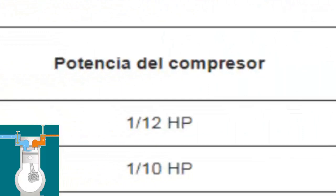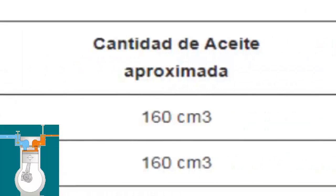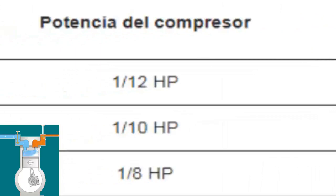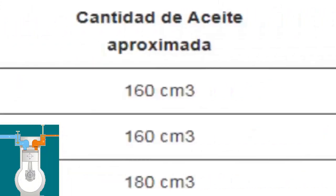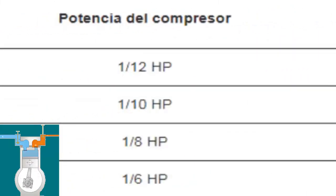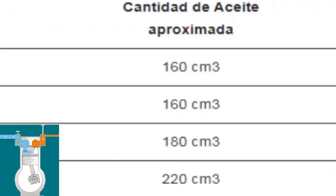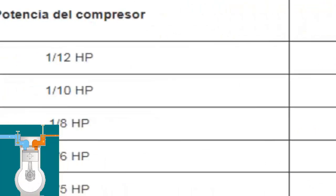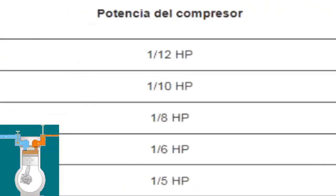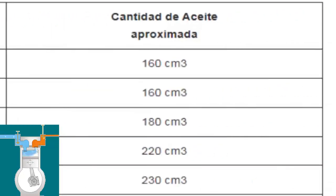12th HP compressor with an approximate oil quantity of 160 cubic centimeters. 12th HP compressor with an approximate oil quantity of 160 cubic centimeters. 12th HP compressor with an approximate oil quantity of 180 cubic centimeters. 12th HP compressor with an approximate oil quantity of 220 cubic centimeters.